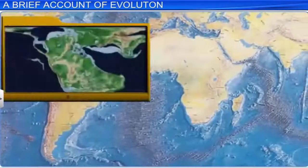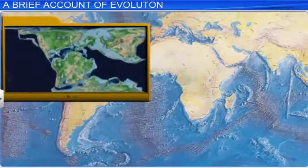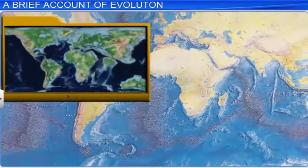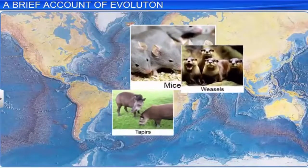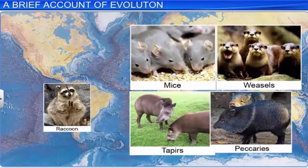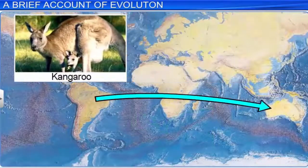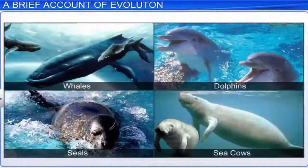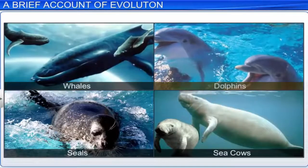Due to continental drift in ancient times, land masses broke apart, and consequently the land mass of South America joined North America. As a result, South American mammals were overridden by North American mammals. Continental drift also caused the safe development of the Australian marsupials. Meanwhile, there were mammals which evolved in water, such as whales, dolphins, seals, and sea cows.